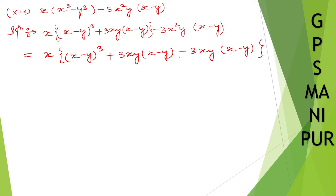So I can cancel this one and this one because one is plus, another is minus. So what's left out is x into x minus y whole cube. I hope this is the answer. Thank you so much. We will meet in the next video.